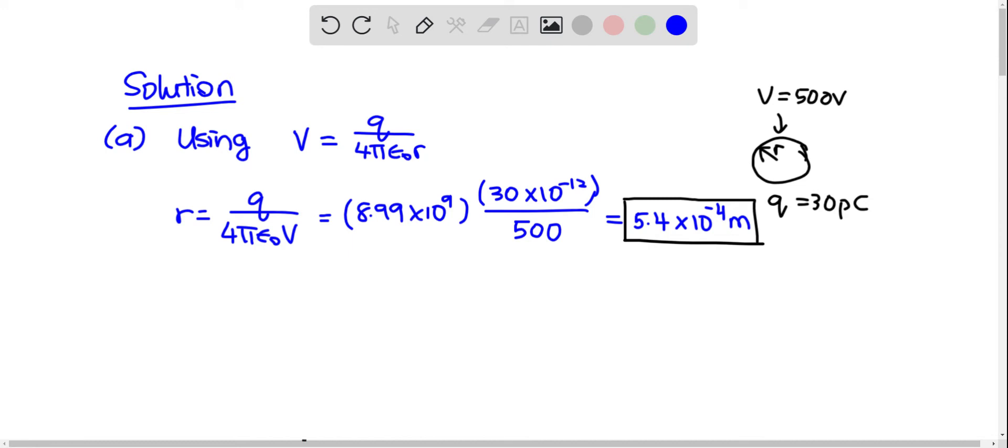Then in part B, we combine two drops of water. So Q prime is equal to 2Q, which is 2 times 30.